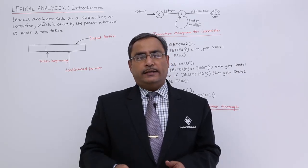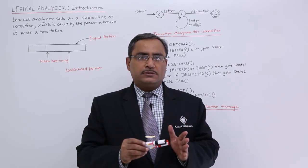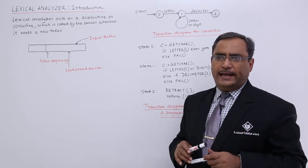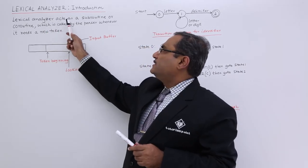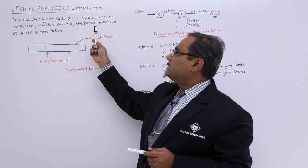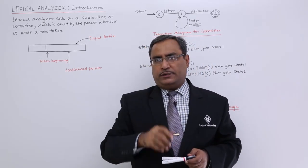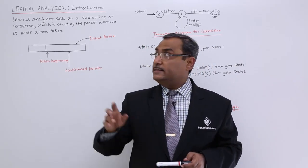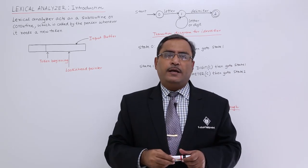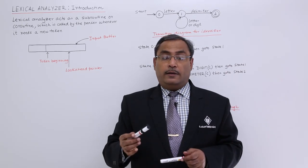Let us discuss lexical analyzer in this particular session. We shall do some examples so that your conception will get clear. What is a lexical analyzer? In a simple sentence, lexical analyzer acts as a subroutine, also can be called as a coroutine, which is called by the parser whenever it needs a new token. For token recognition we require this lexical analyzer. Tokens can be of different types: might be a label, might be an identifier, might be some punctuation symbol, might be some logical operators, might be some arithmetic operators.